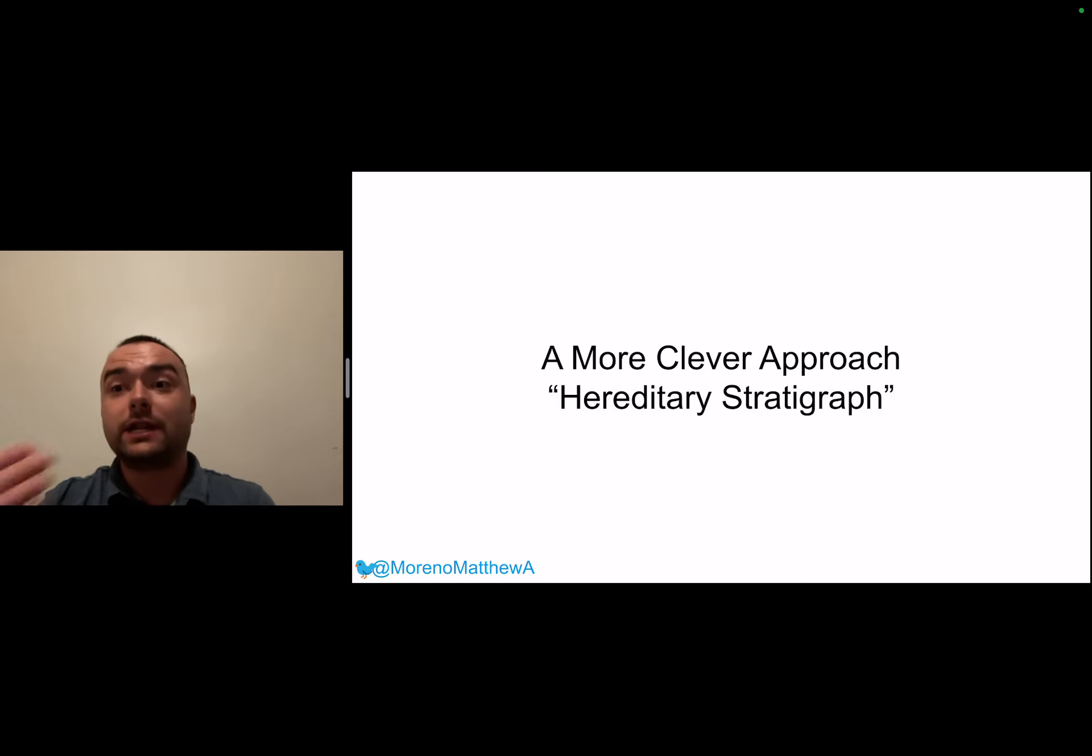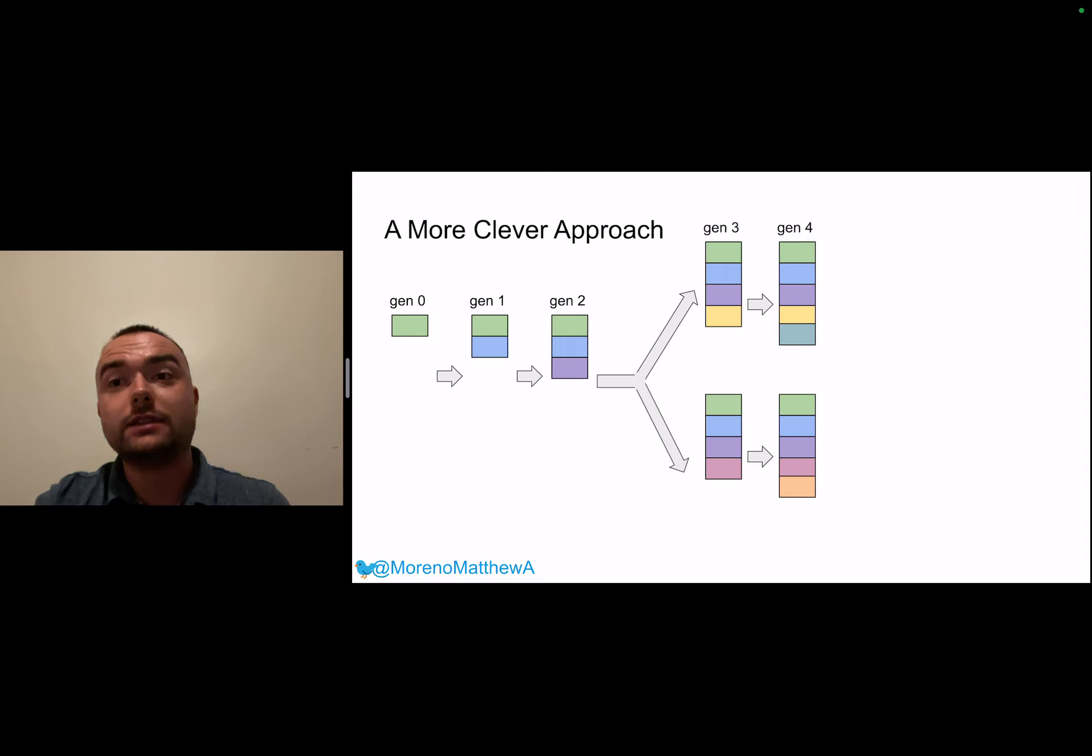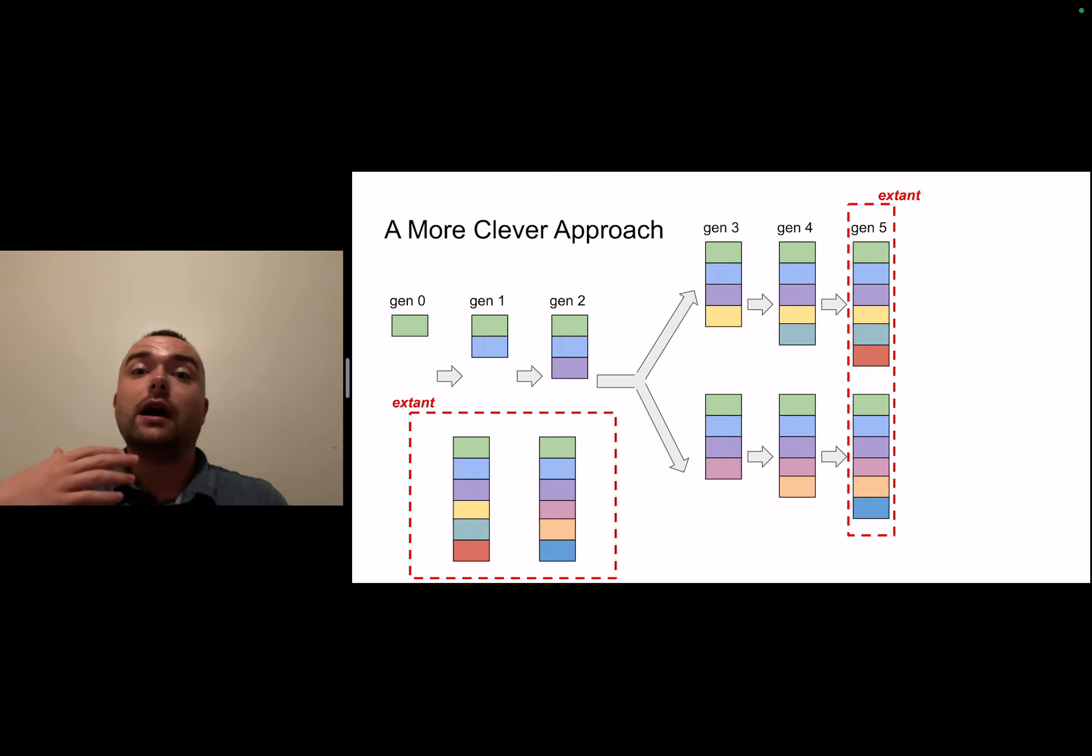The more clever approach that we've been working on we call hereditary stratigraphy. I'll introduce how it works by example. In this approach instead of having a fixed length genome we have a genome that's going to grow over time. We start off with a single packet of randomly generated data that we call a fingerprint, and when a reproduction event occurs an offspring inherits their parent's fingerprint and then generates a new randomly generated fingerprint. You can see this happening with the actual random bits of data in the fingerprints here represented by the different colors of these little packets.